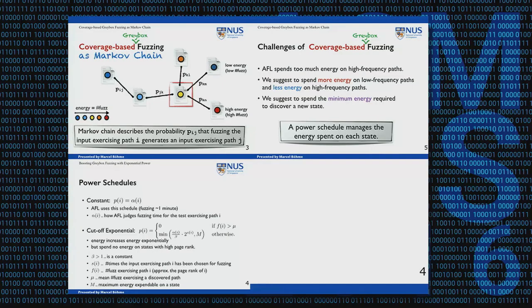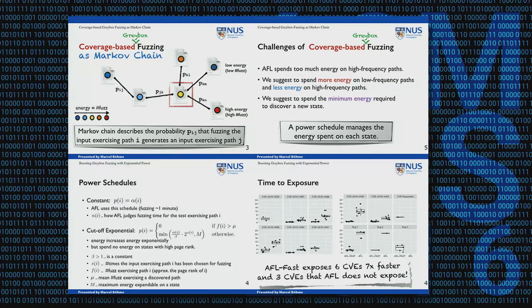In summary, I showed you the benefits of coverage-based gray box fuzzing placed between black box fuzzing, which is very efficient, and white box fuzzing, which is very effective. I've shown that you can model coverage-based gray box fuzzing as a Markov chain and assign energy to certain states. We used this Markov chain model to explain the challenges of existing coverage-based gray box fuzzing, how to address them, and presented power schedules, search strategies, and an evaluation of our tool. Thank you very much.